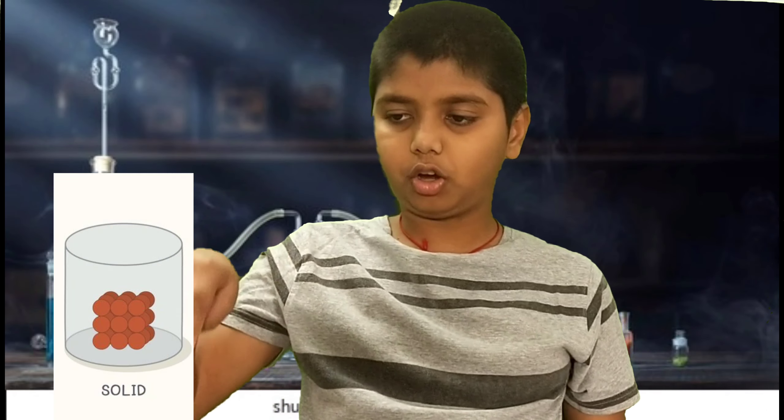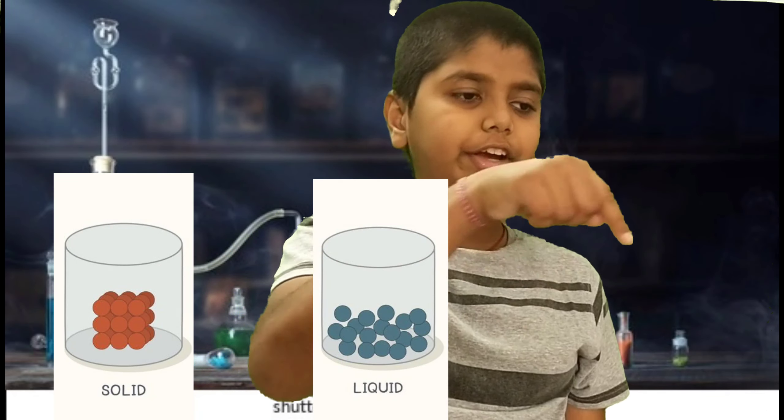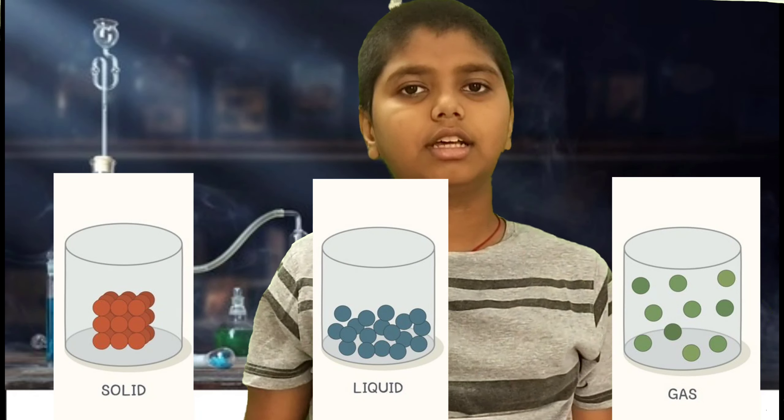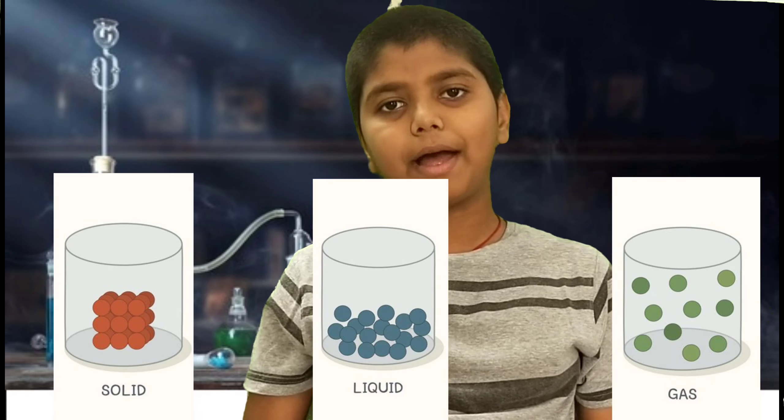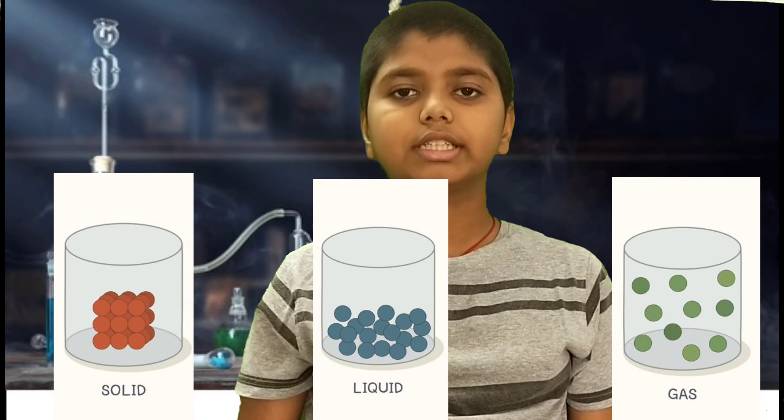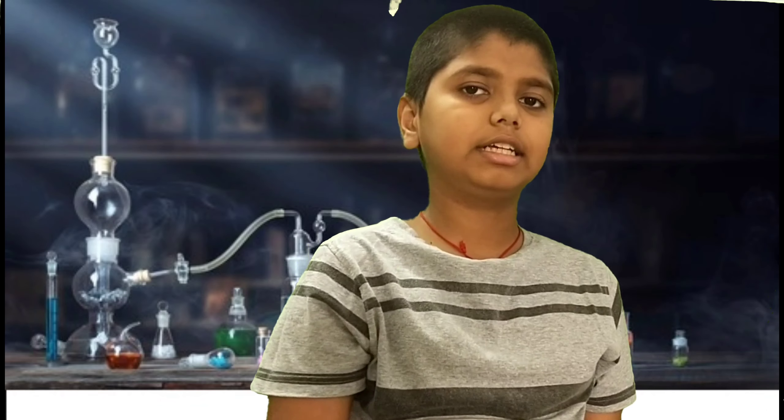In state of matter there are three types: solid, liquid, and gases. In solid, there are tightly packed molecules. In liquids, some loosely packed molecules. In gases, totally loosely packed molecules.